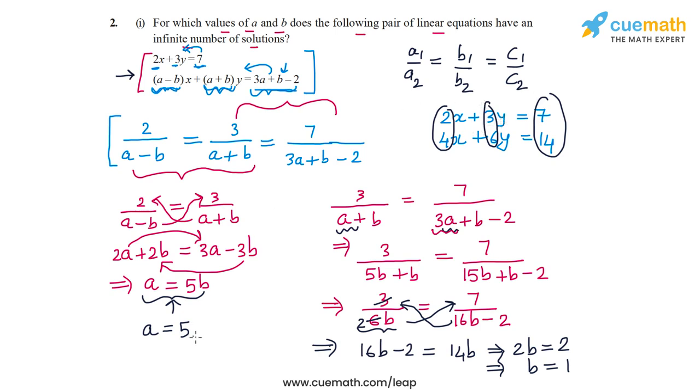So for A equal to 5 and B equal to 1, the given pair of equations will have infinitely many solutions.